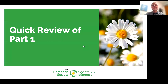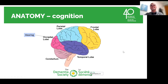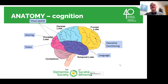Let's do a quick review of part one. The brain has different regions that do different things: the frontal lobe, parietal lobe, occipital lobe, and temporal lobe. Hearing is located between the temporal and occipital lobe. Vision is at the back of the brain in the occipital lobe. Executive functioning is part of the frontal lobe. Language is close to hearing. Visual-spatial abilities relate to vision and the parietal lobe. Orientation — both to time and place — is part of the temporal lobe.